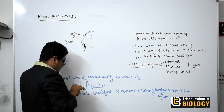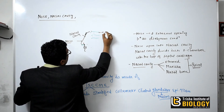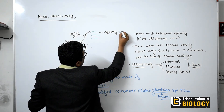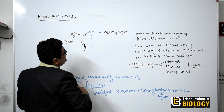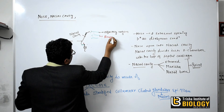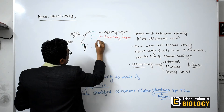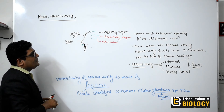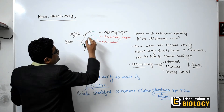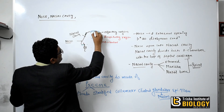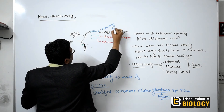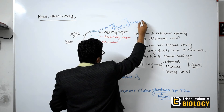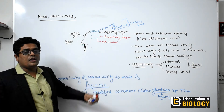The internal structure of the nose possesses three layers. The uppermost part is known as the olfactory region. The middle part is known as the respiratory region. And the lowermost is known as the vestibular part. The olfactory region possesses the olfactory epithelium, which is responsible for the smell sensation.